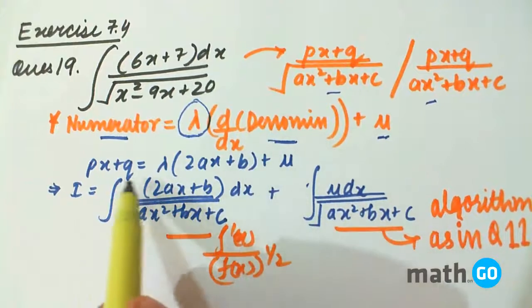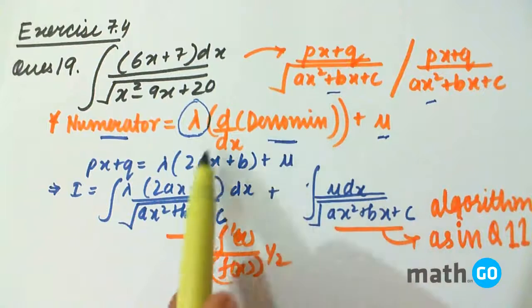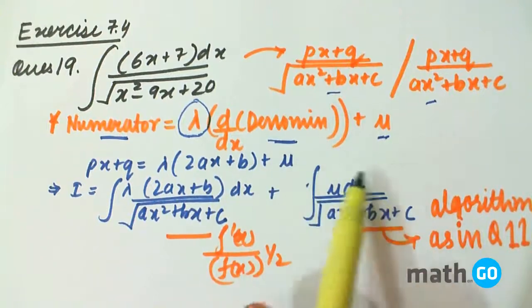We can write it as px plus q equals to lambda into derivative of the denominator that is 2ax plus b plus mu the other constant. Then we find the integral.